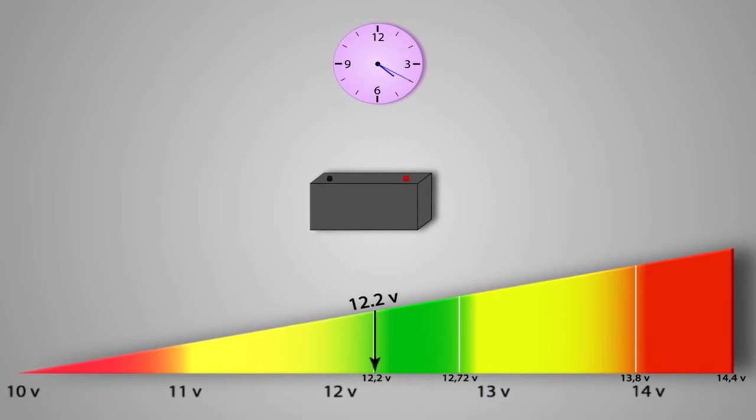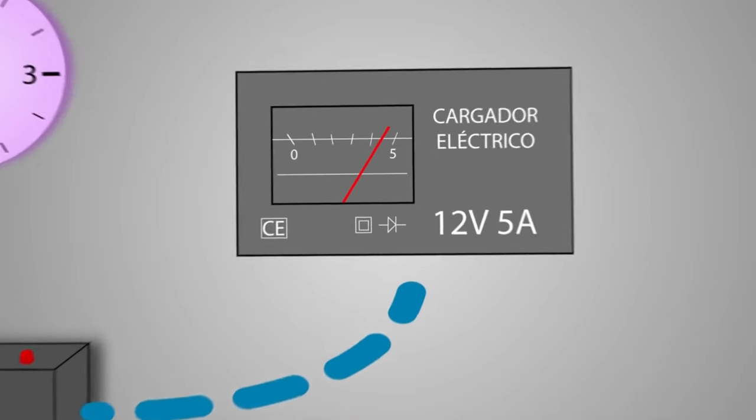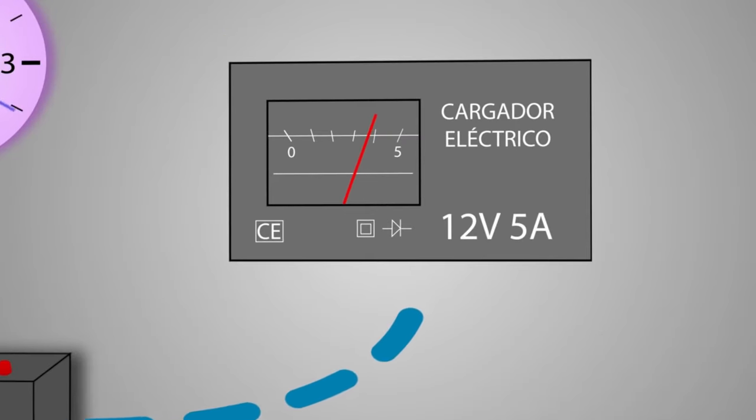A charger that provides trickle charging will be approximately 13.8 volts, and the intensity of the current will decrease as it recharges.